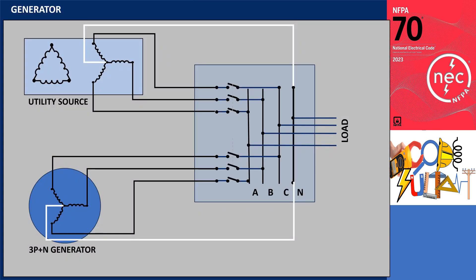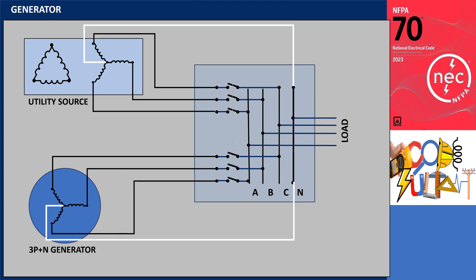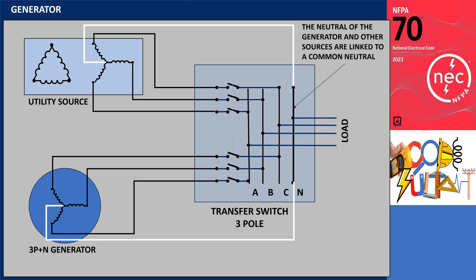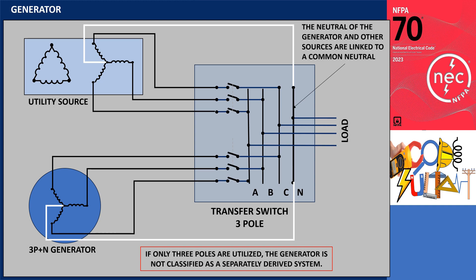In the case of a generator configured with three poles plus neutral, if the transfer switch utilized comprises only three poles, the neutral of the generator and other sources are linked to a common neutral. The neutral conductor is firmly interconnected to a grounded neutral conductor supplied by the service system. Therefore, to determine whether such a generator constitutes a separately derived system, it depends on the number of poles employed in the transfer switch.